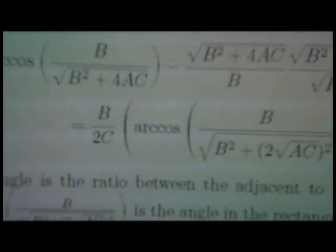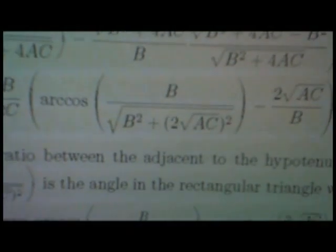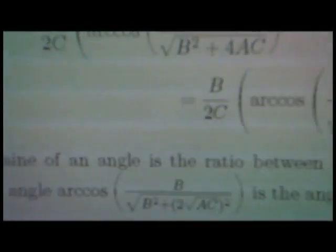And that's equal to b over 2c times in brackets arcus cosinus of b over square root b squared plus 4ac minus 2 square root a c over b.